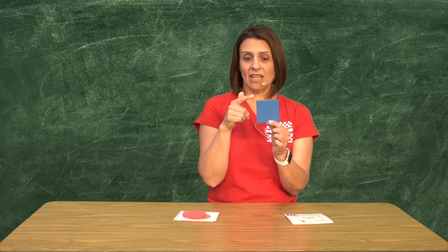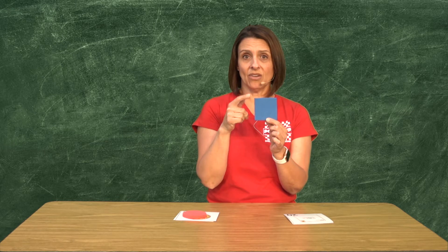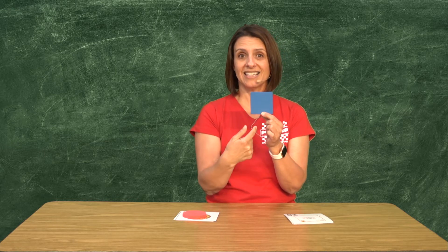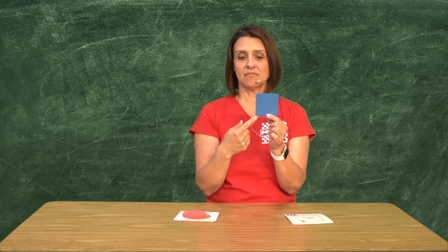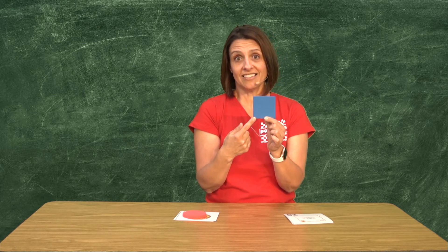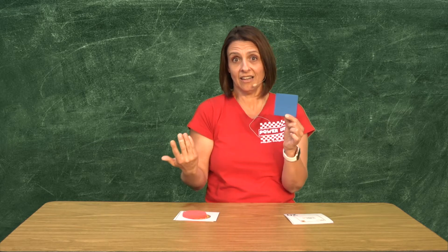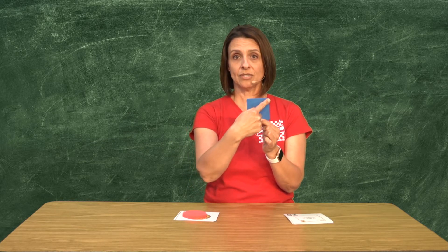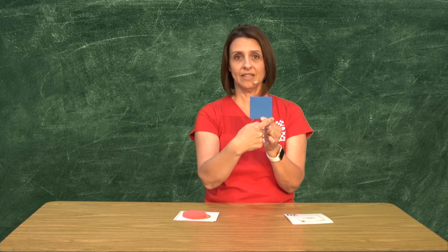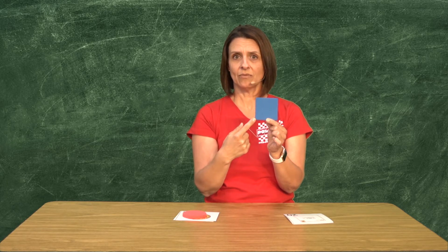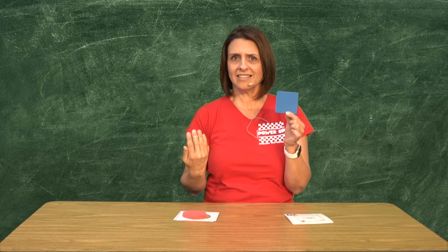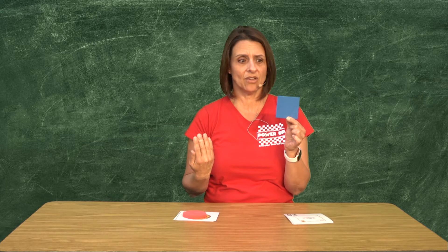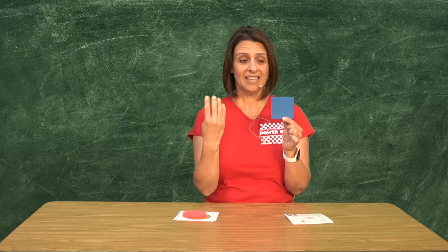Y también miro que un cuadrado tiene esquinas. Vamos a contar las esquinas que tiene el cuadrado: uno, dos, tres, cuatro. ¿Cuántas esquinas tiene el cuadrado? Tiene cuatro. Tiene cuatro esquinas, igual como lados.